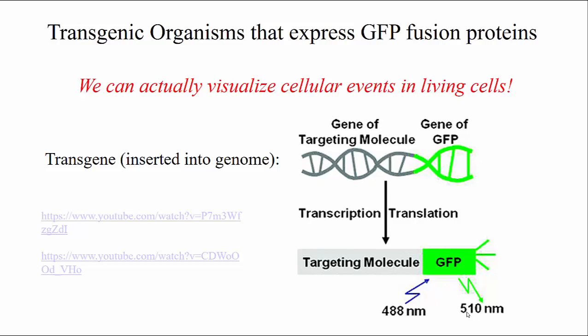Scientists have used GFP to make transgenic organisms so that we can connect GFP to different proteins of interest in the cell. This allows us to observe a living cell without killing it first, and it allows us to observe things such as transport of cargo throughout the cell, mitosis, the process of chromosomes separating from each other, and other really beautiful things. There are a few videos here if you're interested in looking at them.